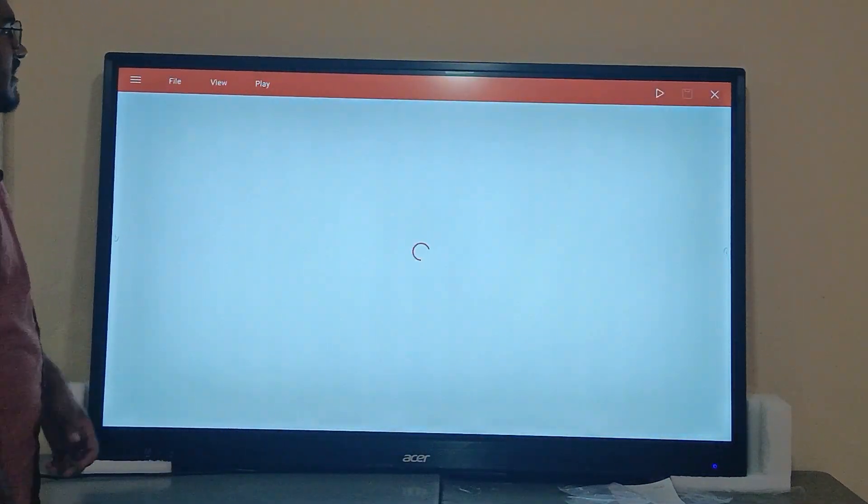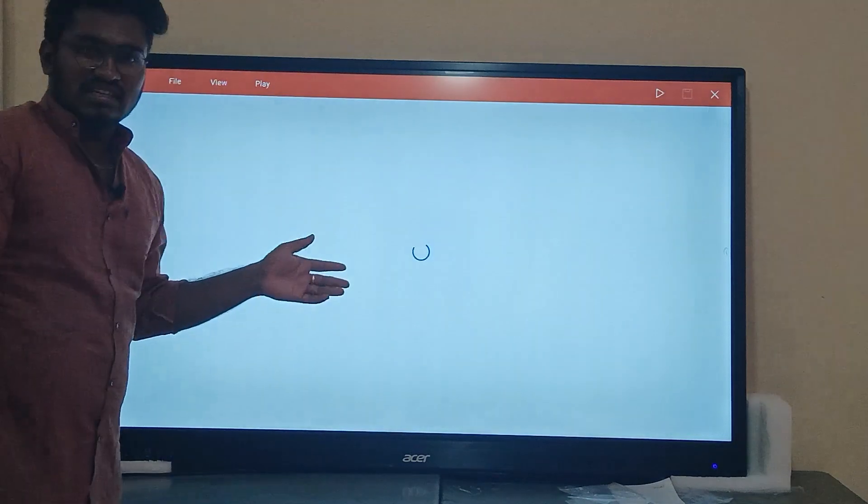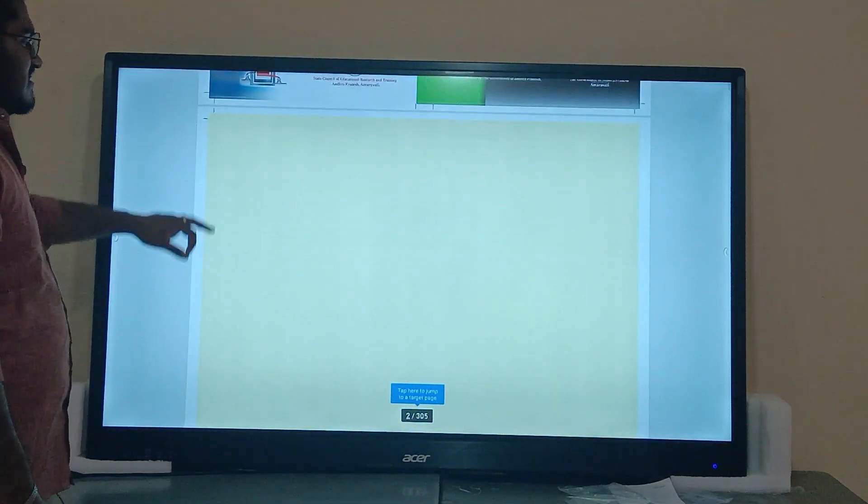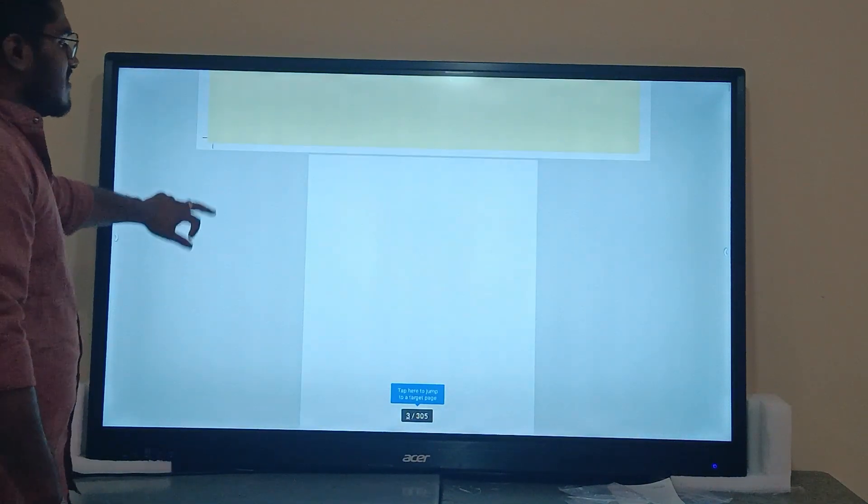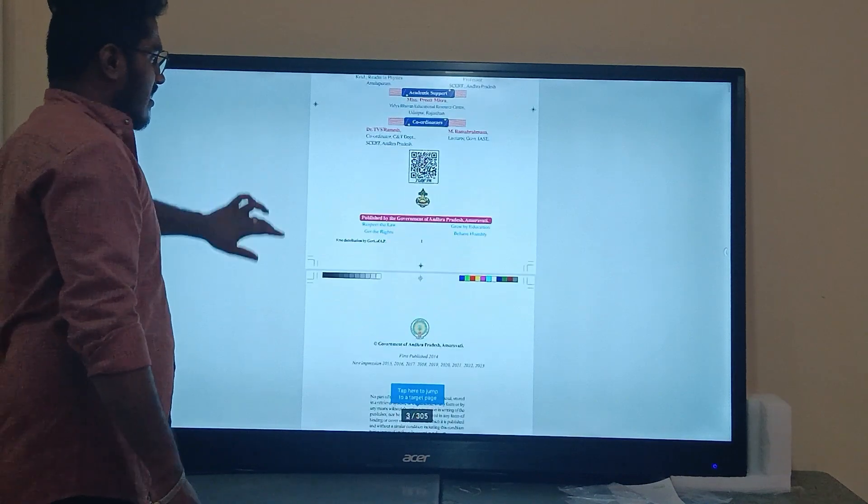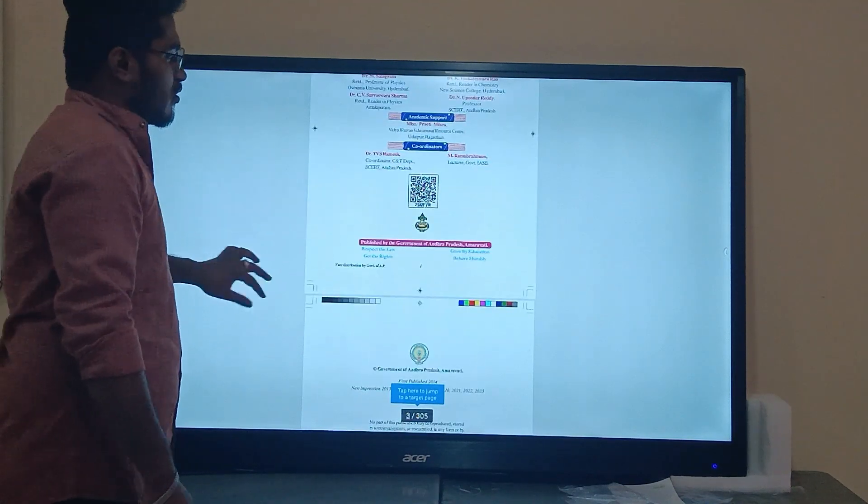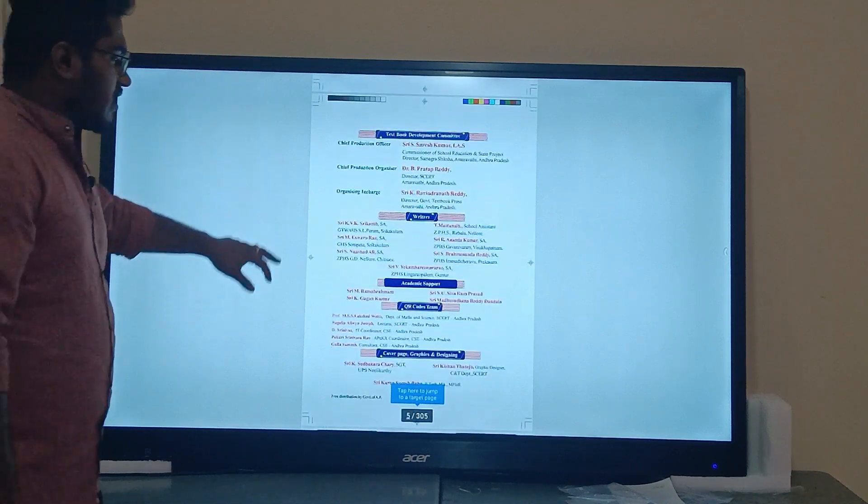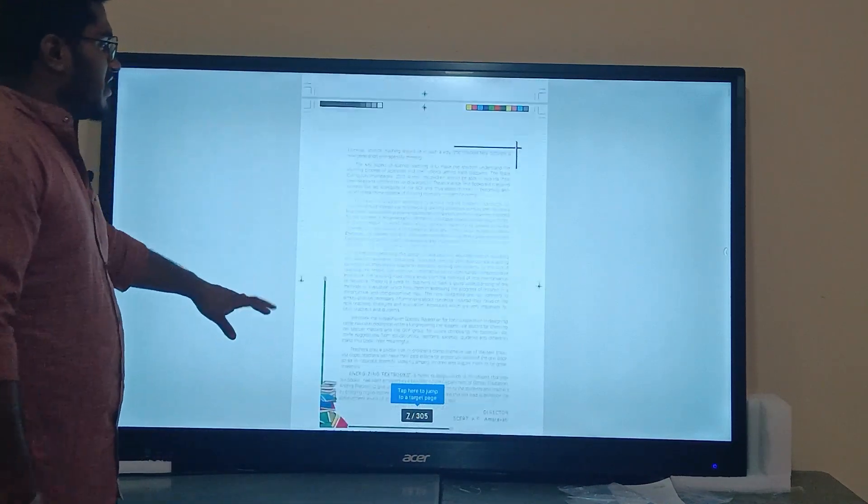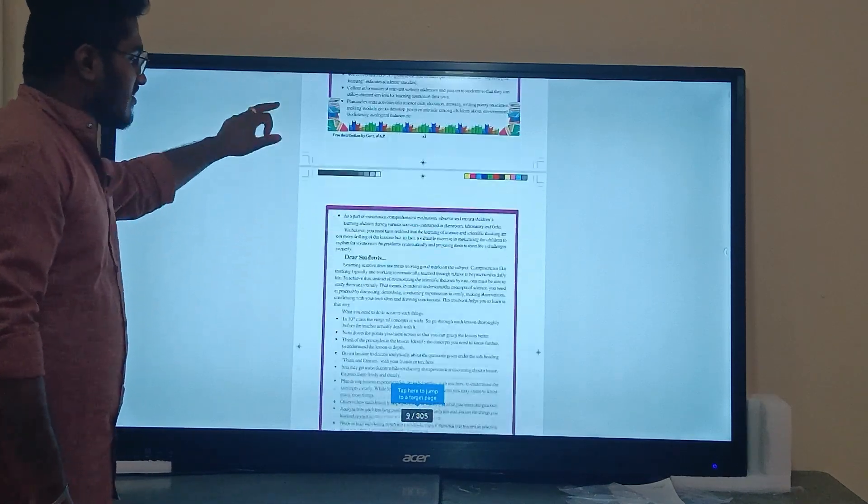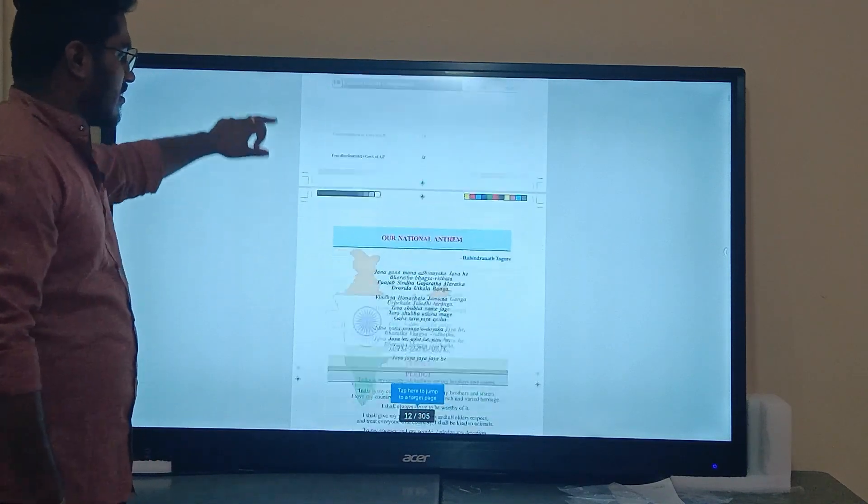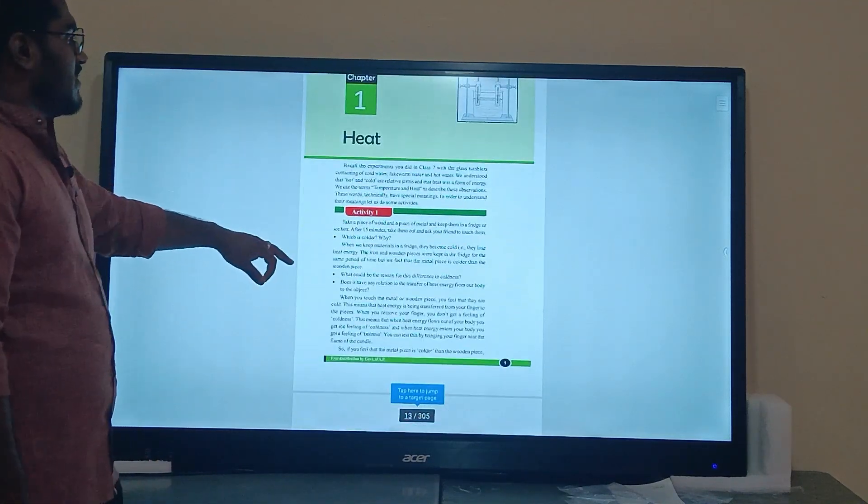Here we have the 10th class English medium physics textbook. Here we have the authors, the QR code, and also the raw data. Here we open physics first unit, the first unit on heat.